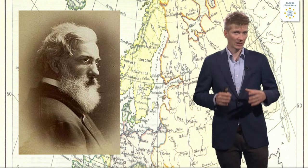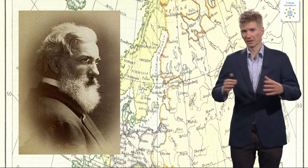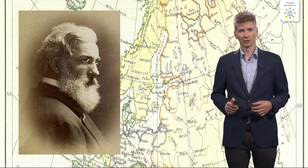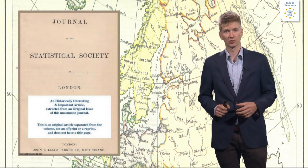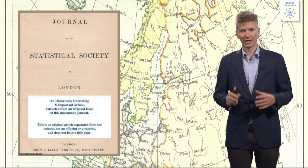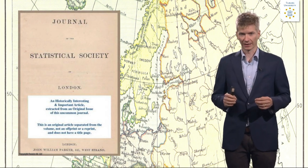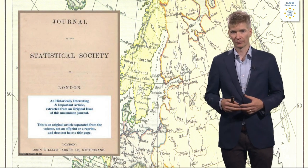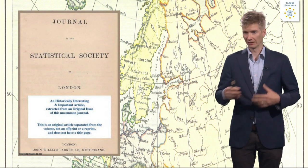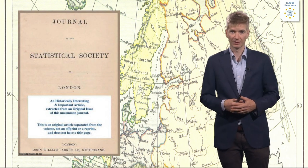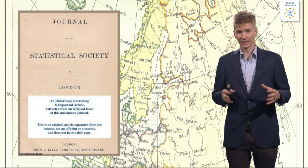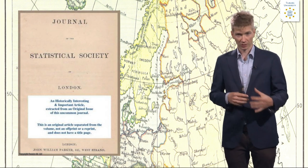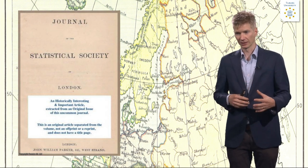Ravenstein was a cartographer at the British war office at the end of the 19th century. He established a series of migration laws, published in a journal at the end of the 19th century, based on an analysis of census data — full population data that governments gather every five or ten years — to investigate how people migrated within the United Kingdom.